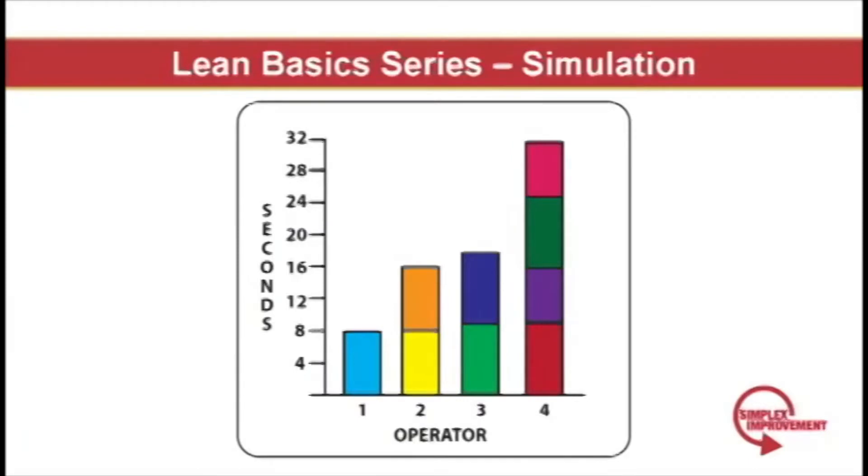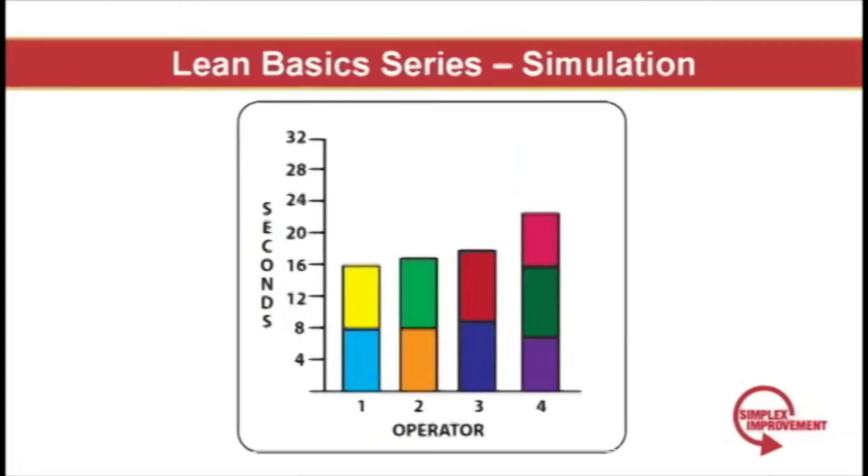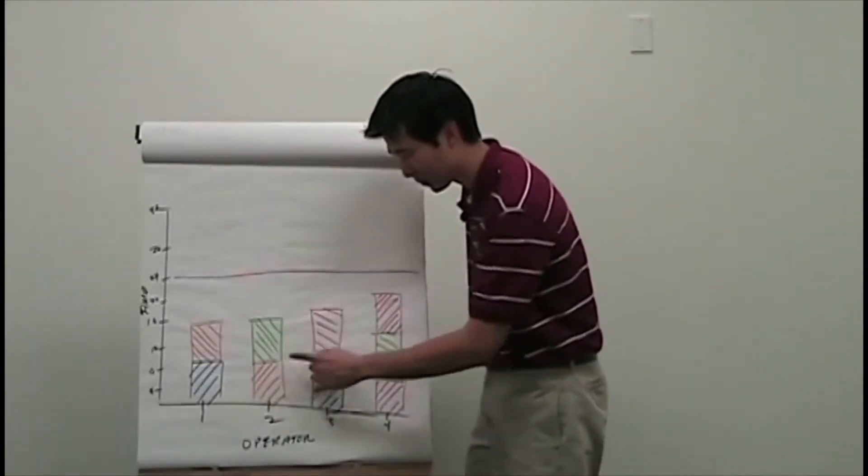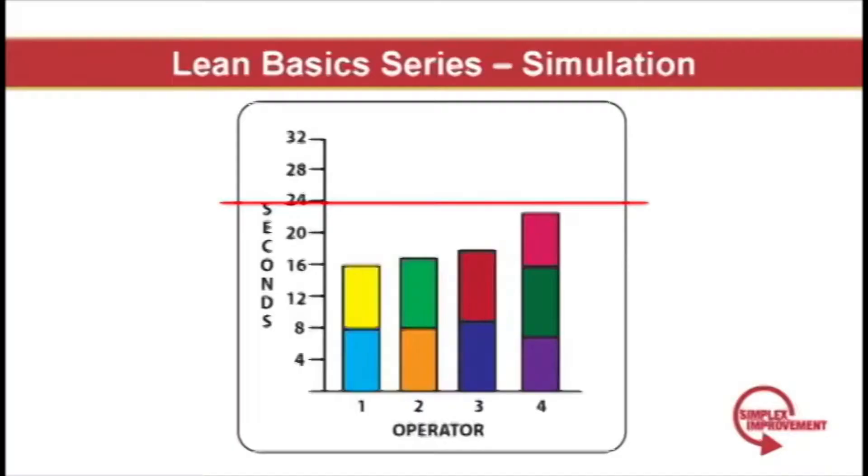Now as a customer, I need planes every 24 seconds, and the way the system's set up right now, they can't make it, because worker four takes about 32 seconds to complete his portion. So this is where level loading comes in. You can see that we divided all the folds pretty evenly across all the operators. You can also tell that they'll easily be able to meet the customer demand of making a plane every 24 seconds.